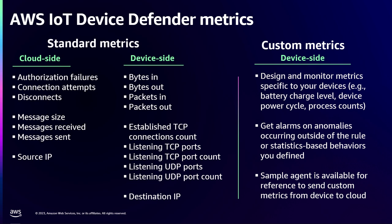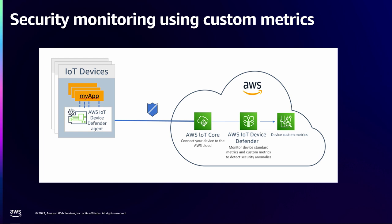What happens if you have certain security metrics which are not part of the standard metrics? If you have metrics that are unique to your fleet of devices, you can use custom metrics. In custom metrics, you define your own security metrics for your fleet of devices. One example of a custom metric could be the number of applications running on the device, the number of processes running on the device, or a configuration change to your device. You can define these kinds of metrics in a custom metric and use AWS IoT Device Defender to monitor those metrics, get alerts, and take mitigation actions.